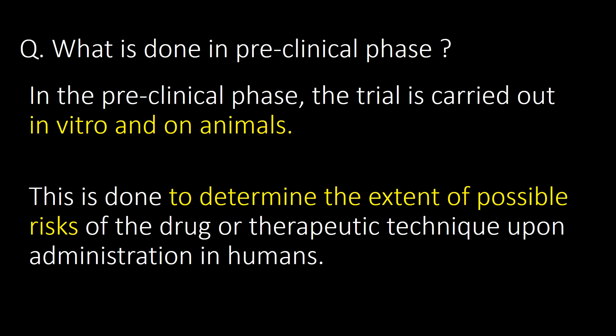What is done in the preclinical phase? In the preclinical phase, the trial is carried out in vitro and on animals. This is done to determine the extent of possible risk of the drug or therapeutic technique upon administration in humans.